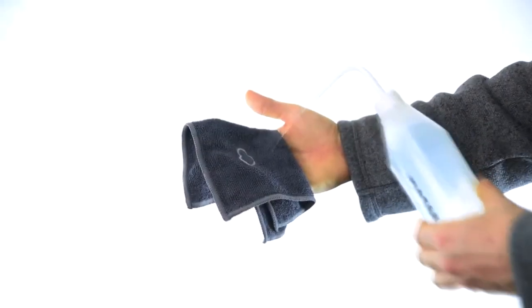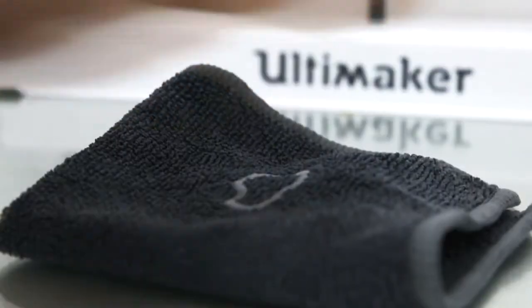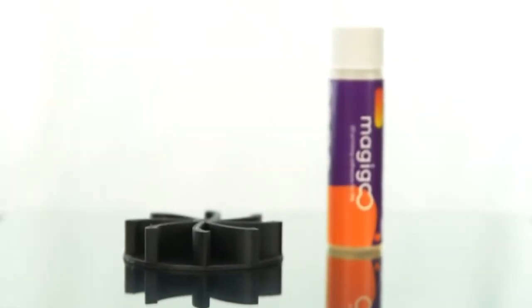For cleaning, just lightly wet a cloth with water and wipe off the glue residue from your build plate, leaving it clean and ready for the next print. Thank you for using Magigoo.